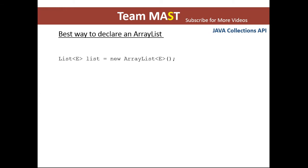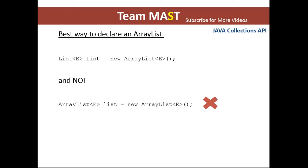In order to declare an ArrayList, you should always declare it with the list interface, because if in future the ArrayList class becomes deprecated, you will have to change a lot of code. So never initialize or declare an ArrayList directly as an ArrayList type. Always initialize it as an instance of the list interface, and then declare it as an ArrayList, LinkedList, Vector, or Stack — whichever you want to use.